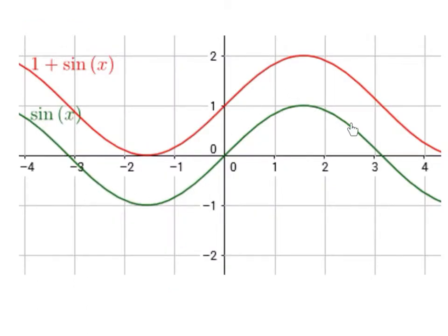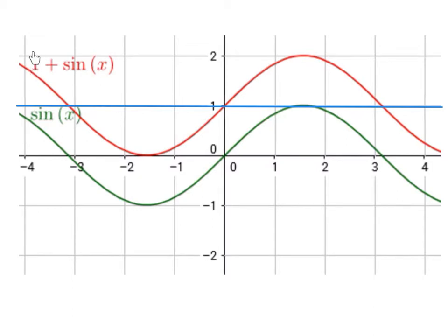The green curve is y equals sine of x. The red curve is y equals 1 plus sine of x, and we see that the red curve has been moved 1 unit upwards — it's been shifted vertically upwards. And now the midway line is y equals 1. So this number here will tell us where the midway line is.